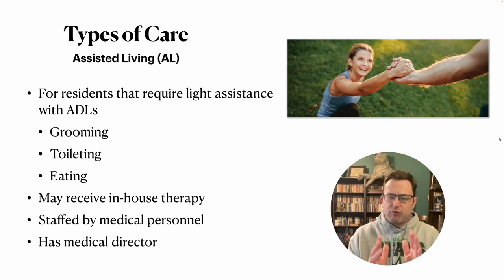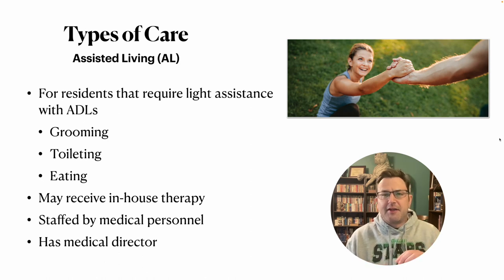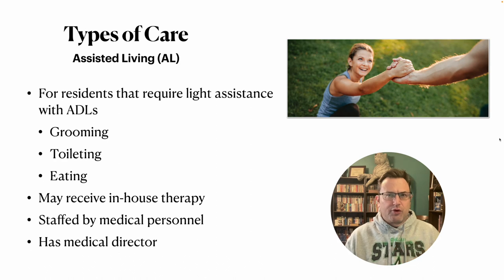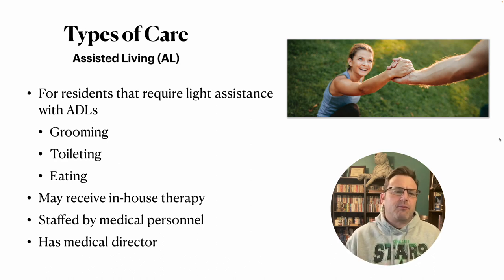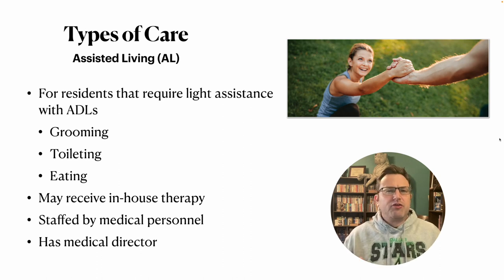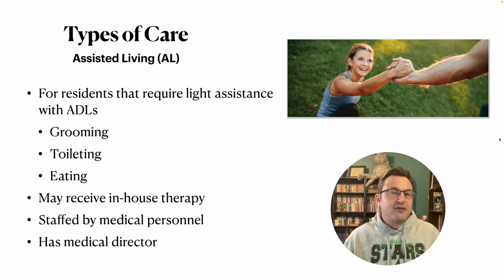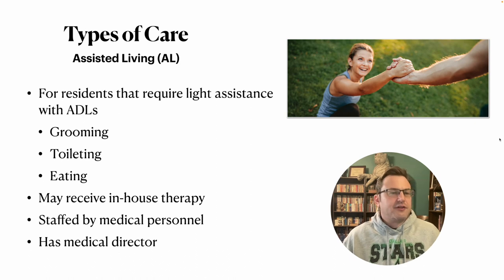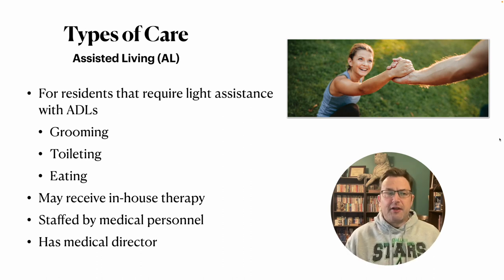Assisted living is kind of a gray area — designed to meet the needs of people who can't quite live independently but don't need the intensive care of a long-term care facility. Generally, it's for residents requiring light assistance with ADLs such as grooming, toileting, and eating — maybe diet help or a consistency adjustment, but not help with feeding themselves. Many services provided are based on the individual facility's service plan.